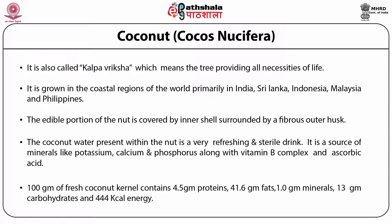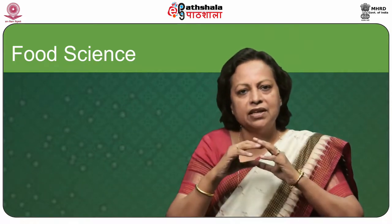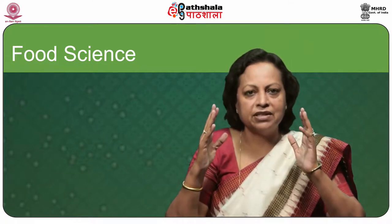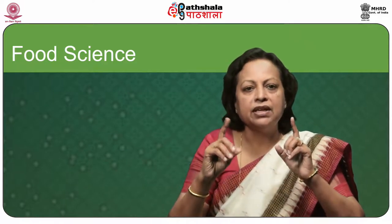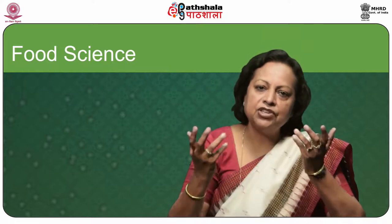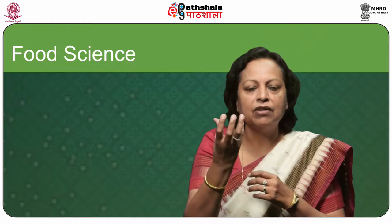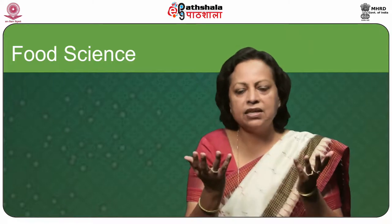100 grams of fresh coconut kernel contains 4.5g proteins, 41.6g fat, 1g minerals, 13g carbohydrates, and 444 kilocalories of energy. Coconut has a high place in Hindu religious ceremonies. The fresh kernel is sometimes eaten directly but more often grated and used for preparing sweets, curries, and chutneys. The major use of coconut is in the manufacture of copra, from which coconut oil and coconut cake are obtained. Copra is available in two forms: ball copra and cup copra.